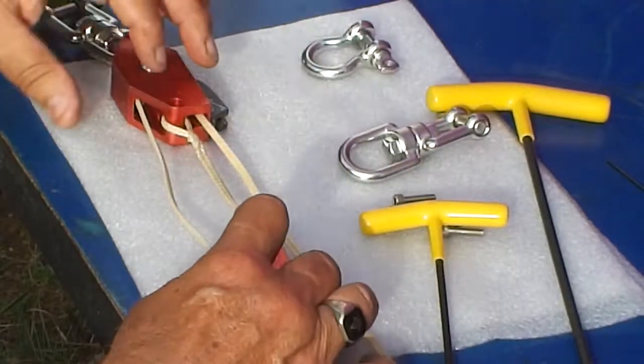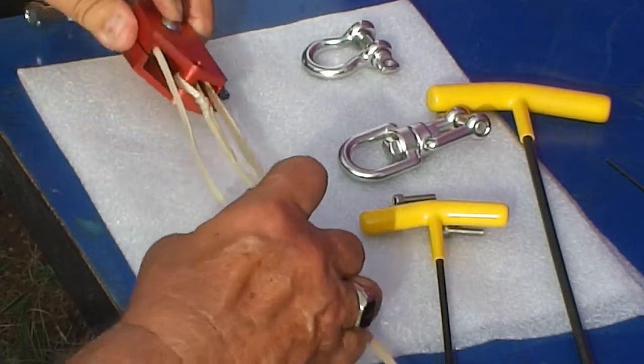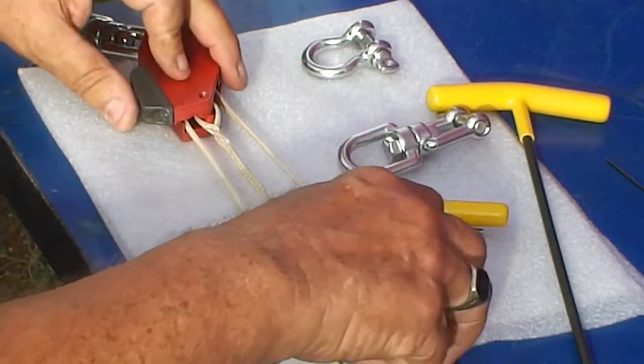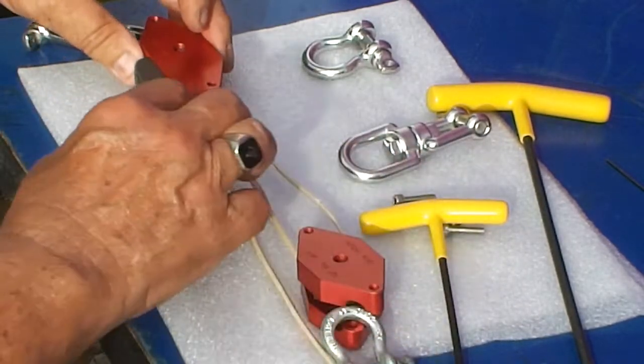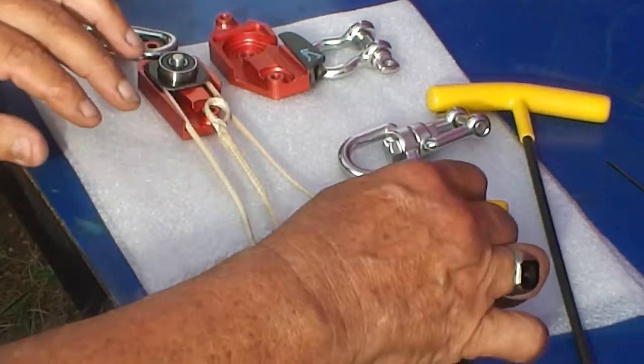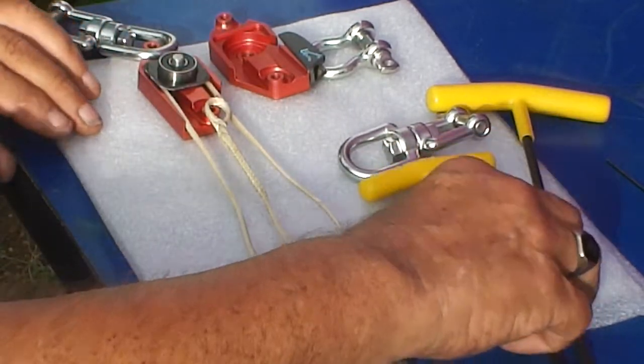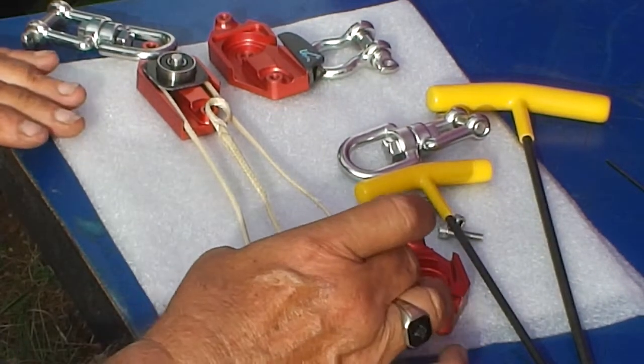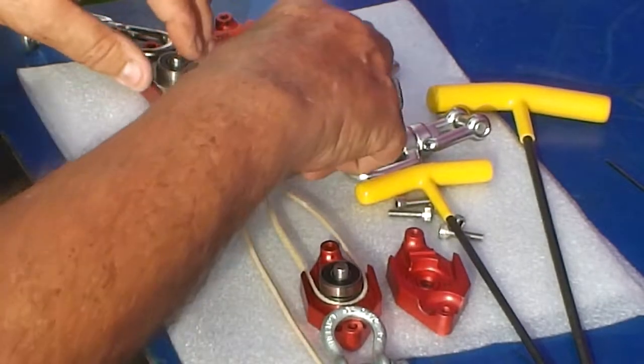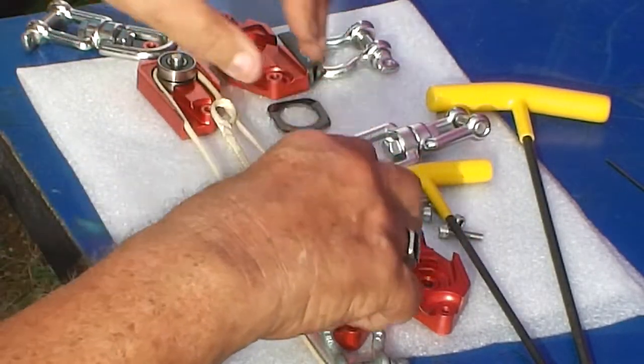Now what I do is I flip it over so that the threaded section is just like that. Now we have our Delrin spacer which is in here, and it will only go back in one way.